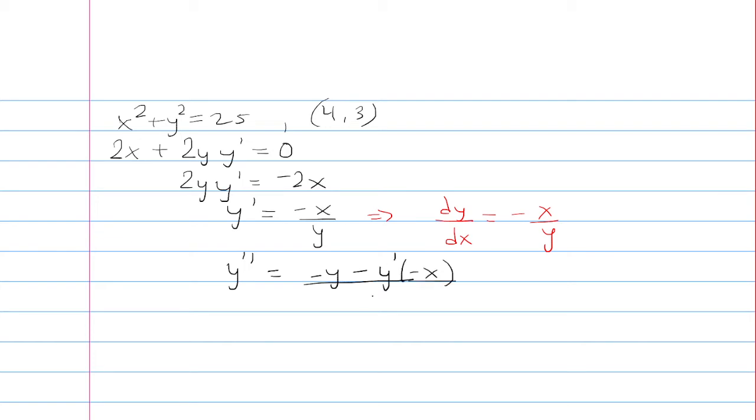The two negatives make it positive, so it's negative y plus x times y prime, all over y squared.